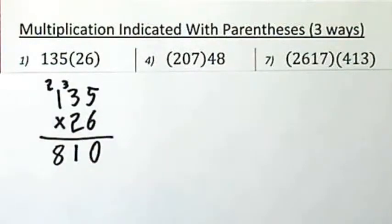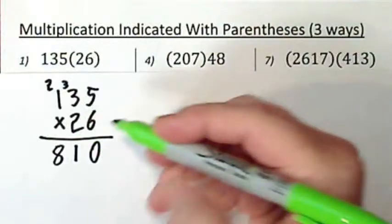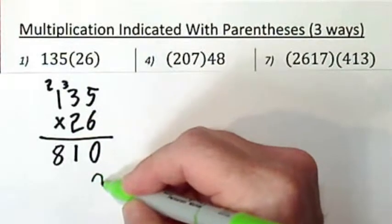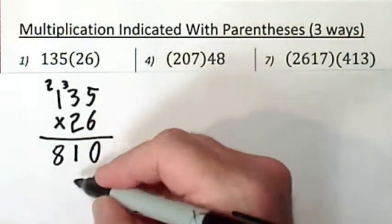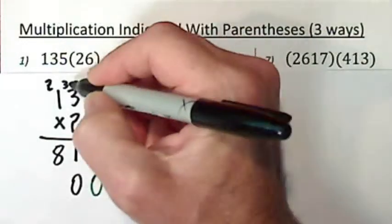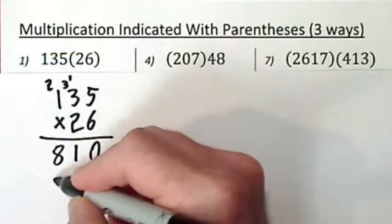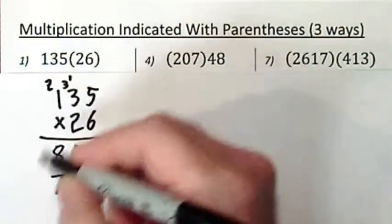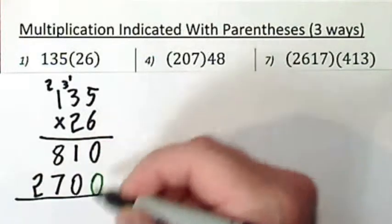When you move over to the next digit, that's twenty, it's in the tens place. So I put a zero here before I even start, and now I can just say two times five is ten. Carry the one. Six, seven. And that's two. Now we simply add these.